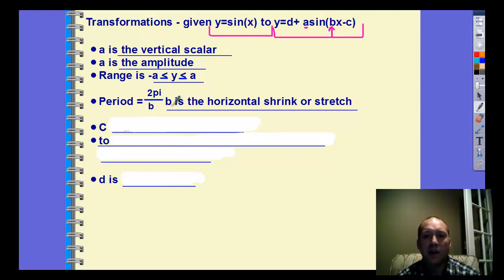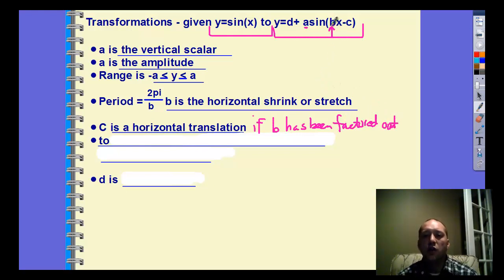So our c value is the horizontal translation. And I should add something. If b has been factored out. If you want to see the horizontal translation, how much we move it left or right, you need to factor out that b value. So if I had a function like sine of 2x minus 3, if I had that, that 2 has been multiplied into this parenthesis, so it's already been multiplied to 3. So if I actually want to see how far it's been moved, I need to factor the 2 out to see that the graph has actually been moved 3 halves to the right, so 1½ right. So factoring the b out will help you see what the translation is.